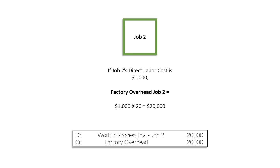Some of you might think: what if what we applied is not equal to how much factory overhead we actually incurred? For example, what if we applied $100,000 worth of factory overhead, but when we look at our records, we only actually incurred $90,000? We're going to discuss that in a later video. The next video is a summary of all this, and we'll discuss that specific part in the last video, Lesson 6.